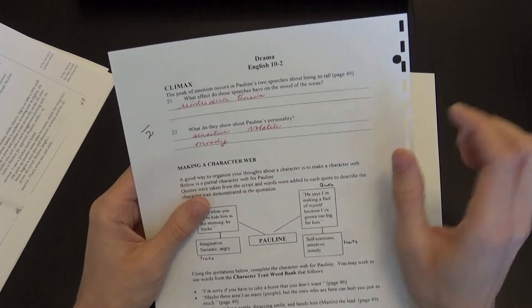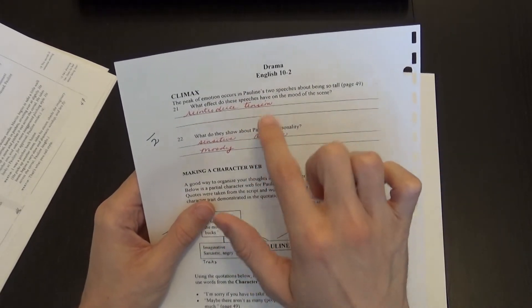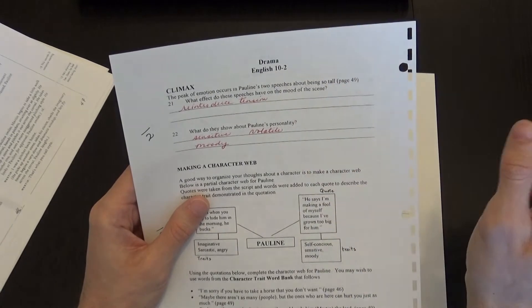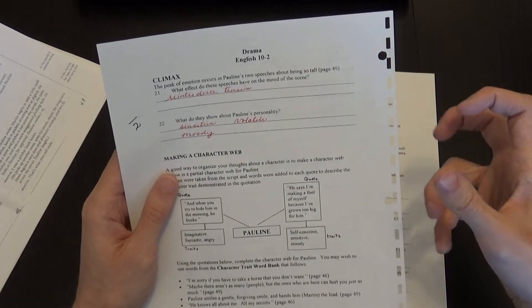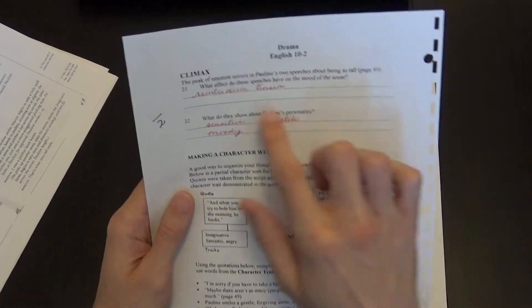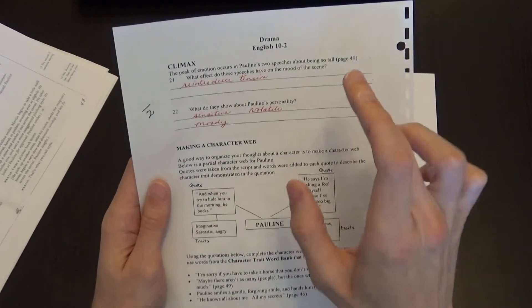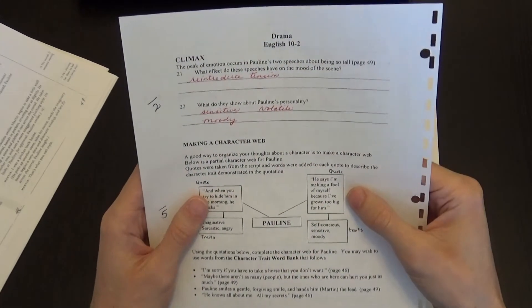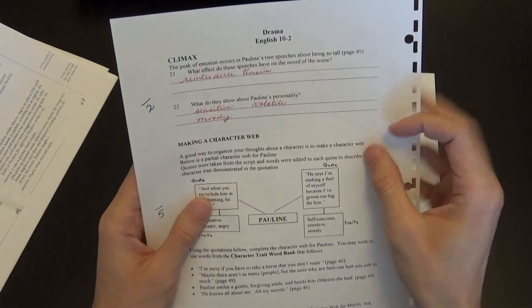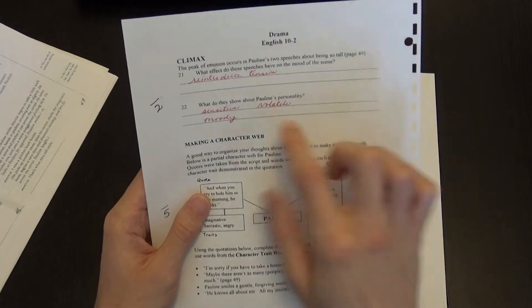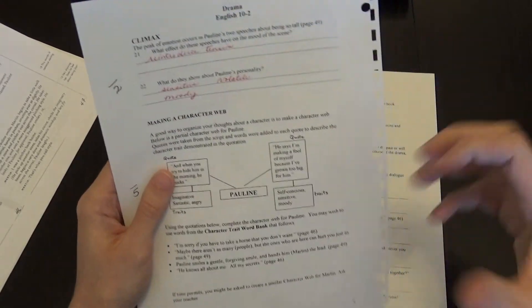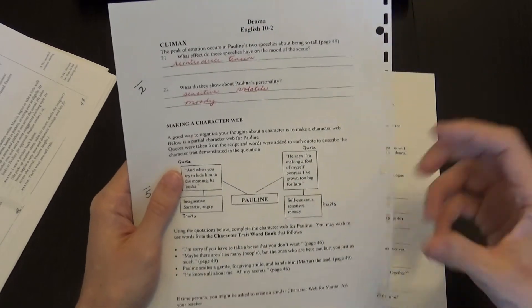And now question 21, so what effect does these speeches have on the mood of the scene? So that's page 49. So it reintroduced tension. So they became friends, they liked each other. But after what Martin said on the bottom of page 48, it reintroduced tension. What do they show about Pauline's personality? That she's very sensitive, volatile, moody. So you've got to be careful what you say around her and how you say it.